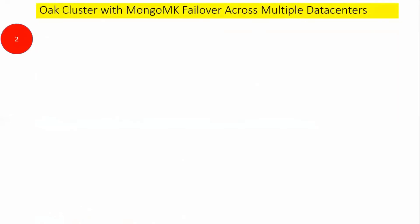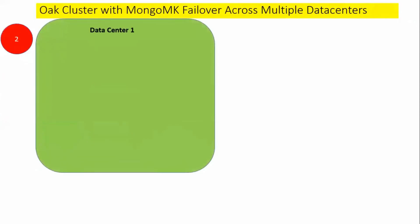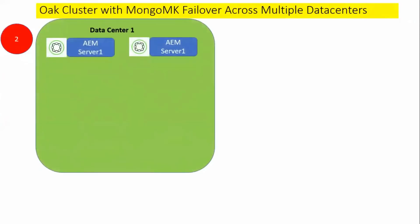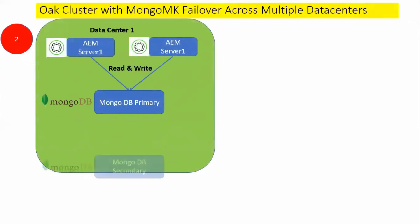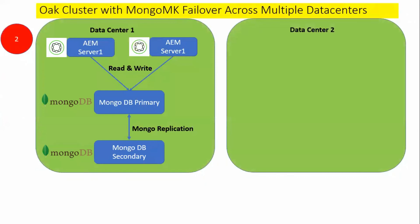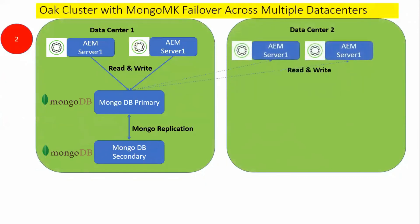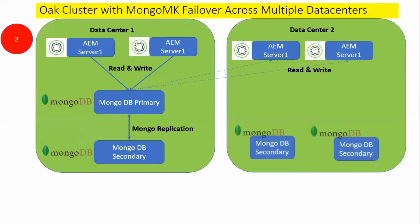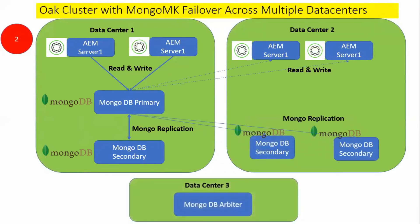Now let us see the second option: cluster with MongoMK failover across multiple data centers. We have data center one with multiple AEM servers and a MongoDB primary where all reads and writes happen, and a single MongoDB secondary instance with replication from primary. Data center two has a similar setup, and data center one and data center two are kept in sync.